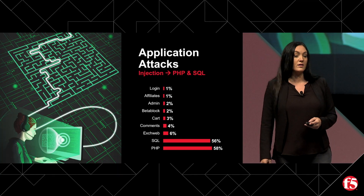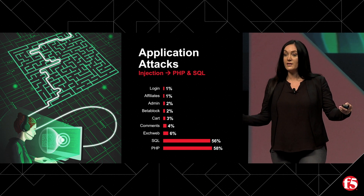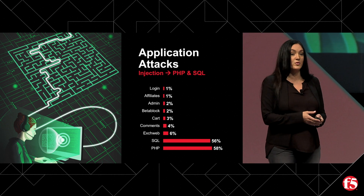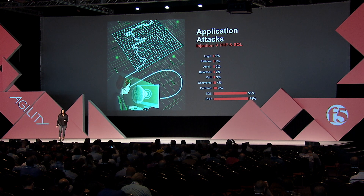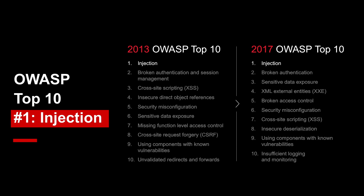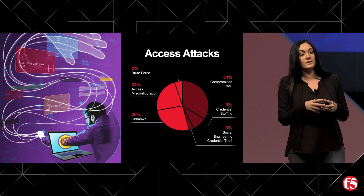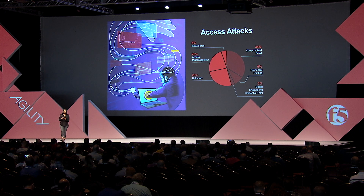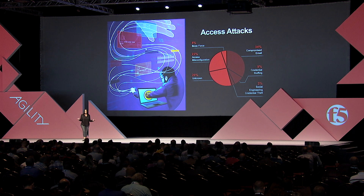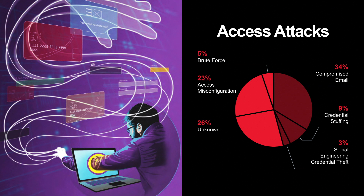If you want to double-click on the types of application attacks that lead to breaches the most, it is injection — most security professionals would nod their heads and agree. Specifically targeting PHP and MySQL. If you're going back to work Monday to remediate vulnerabilities, start there. We're not the only ones saying this — OWASP's top 10 list has had injection vulnerabilities at number one the last two times they've published; they just refreshed it last year. For access attacks, that second bucket, compromised email is the biggest piece of the pie — an employee getting phished via corporate or personal email. Compromised email, credential stuffing, and social engineering together mean you cannot trust your users. You have to have multi-factor authentication in place.